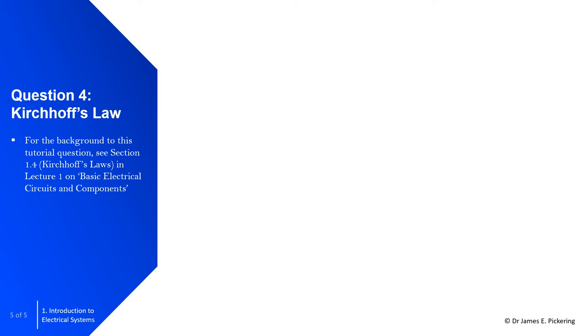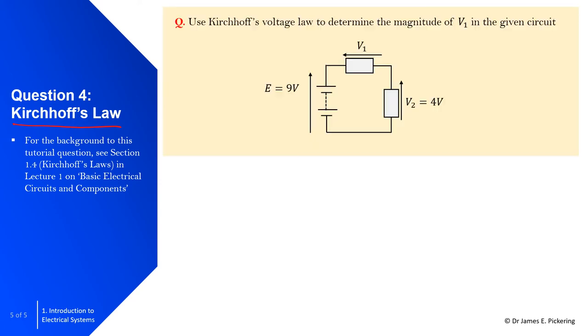In question 4, we're again going to consider Kirchhoff's law, but in this case, we're going to look at the voltage. The question asks: use Kirchhoff's voltage law to determine the magnitude of V1 in the given circuit. What we have here is effectively your source voltage here, or potential difference. This could be a DC battery. Here we have V1 and V2, the potential difference across these two resistors.